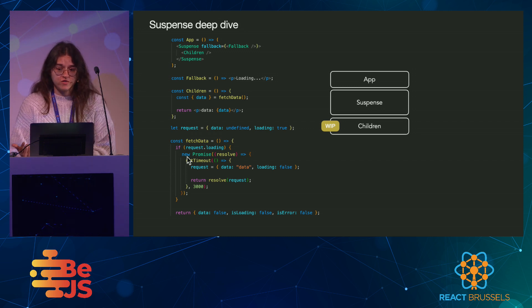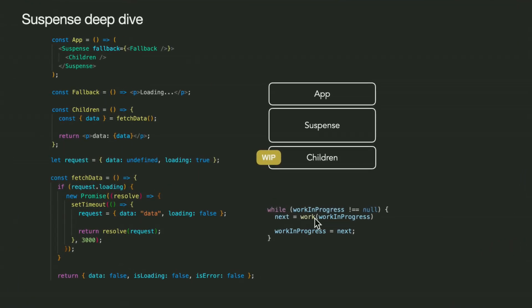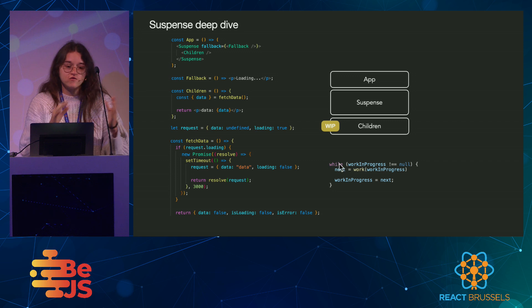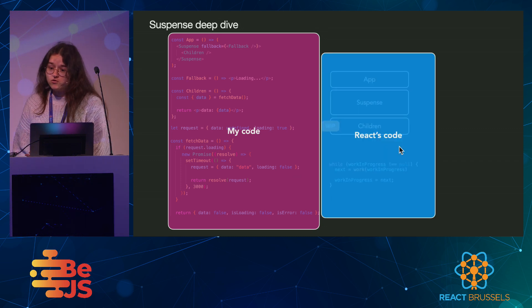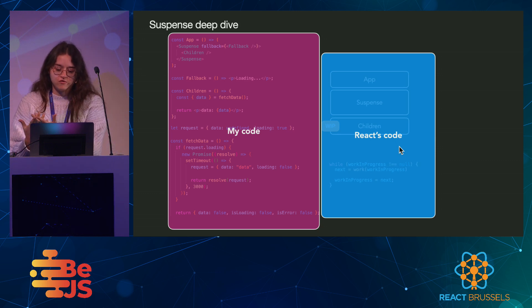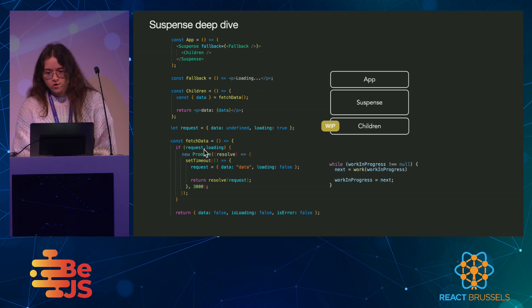But how can we interact with suspense? Remember this work loop? Our component, our promise, is launched somewhere within this work function. While in this work loop, we're going through the tree. So our code here is nested somewhere inside this work function, and we'd like to interact with suspense that's located way above our component in totally different code. From my code, I don't have access to React's code — nor do I want to. I don't want to bother with details of implementation. So how can we communicate to React that a query is happening? The trick I found really interesting is this: to use suspense, you don't simply launch a promise. You throw it.